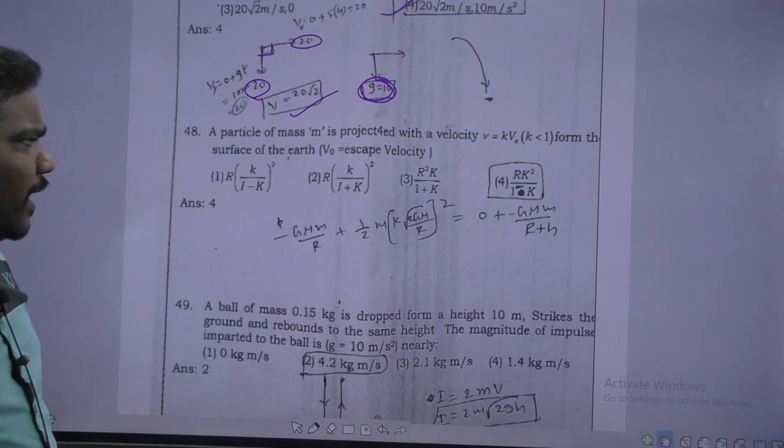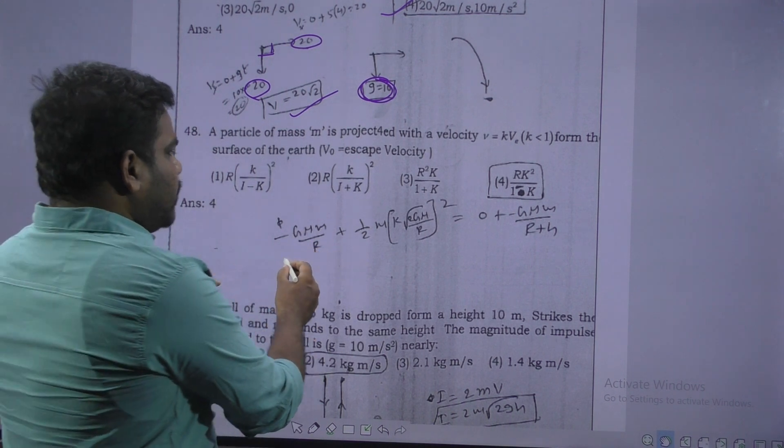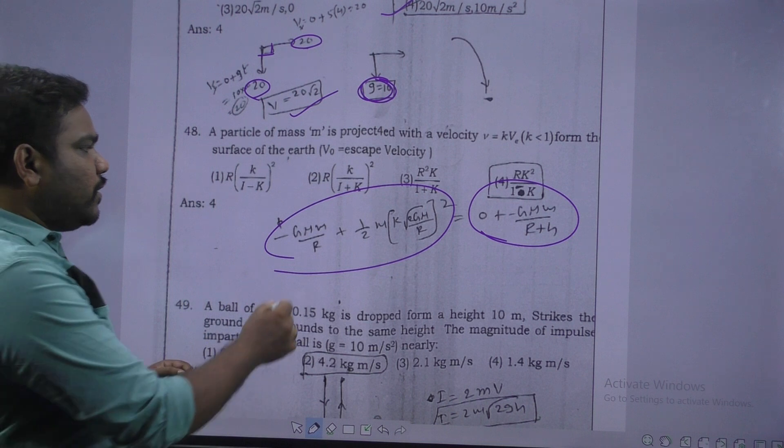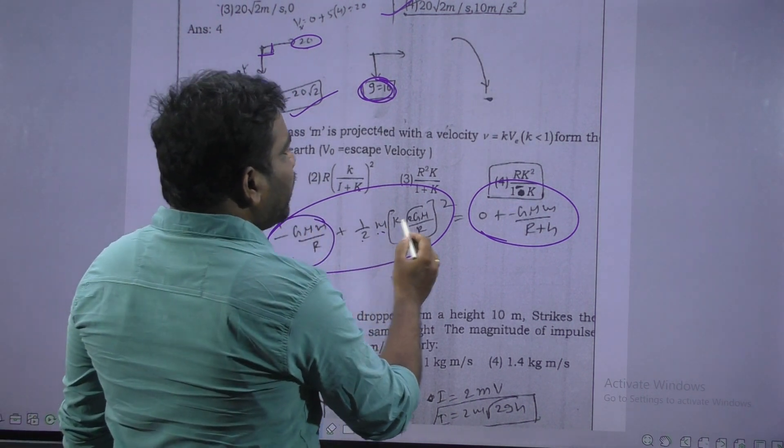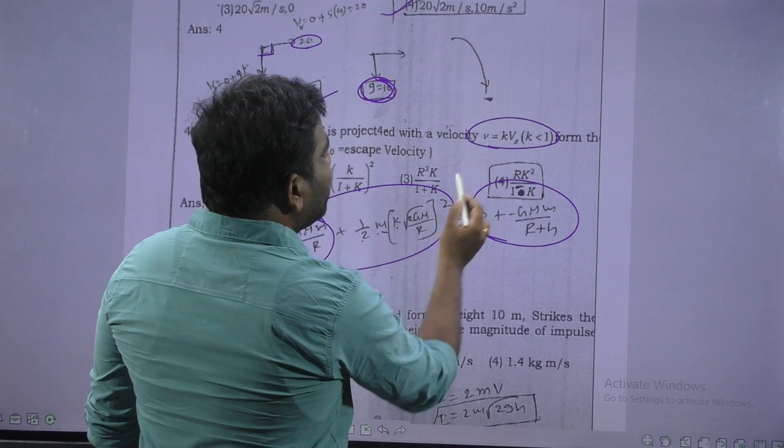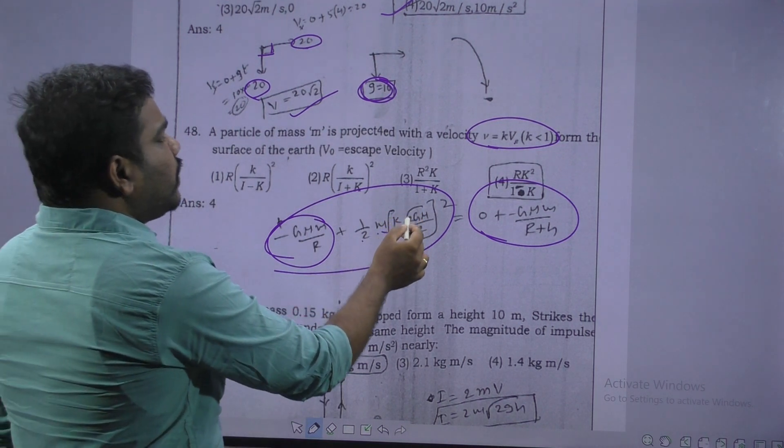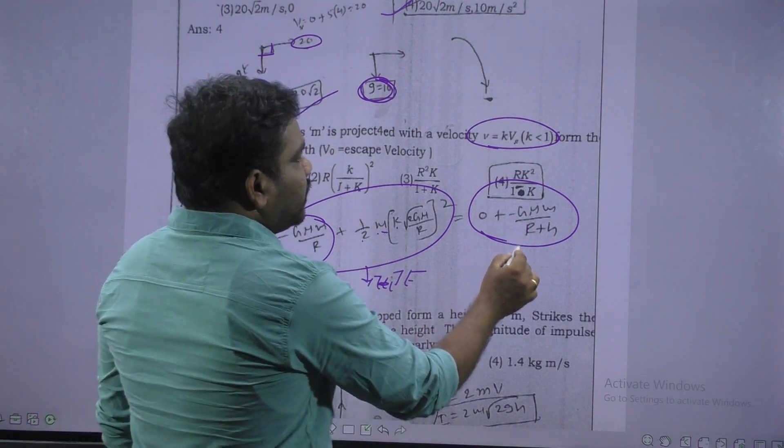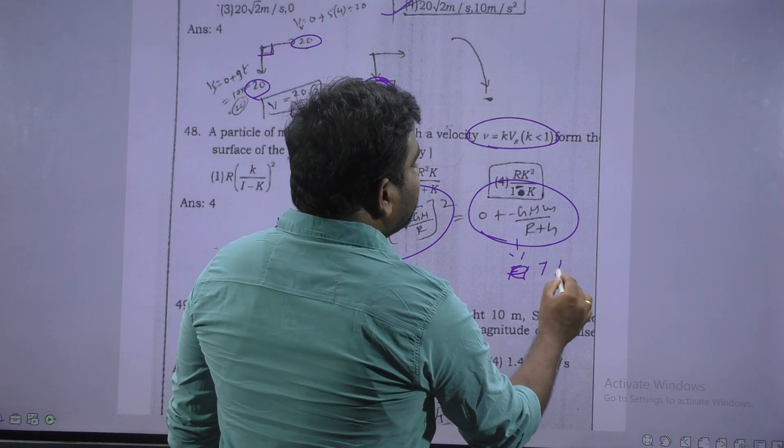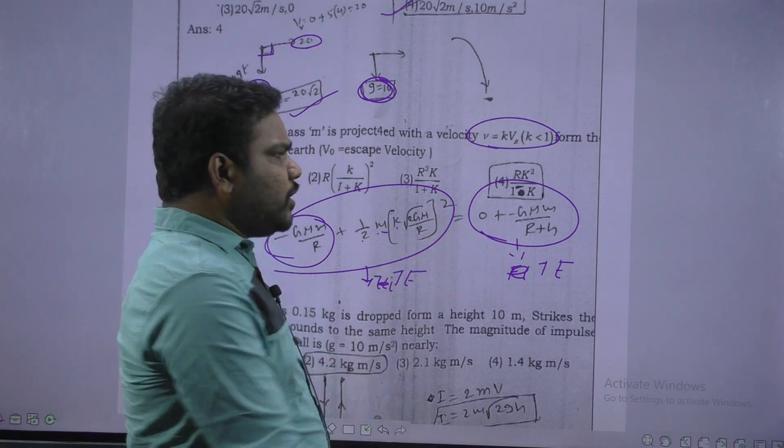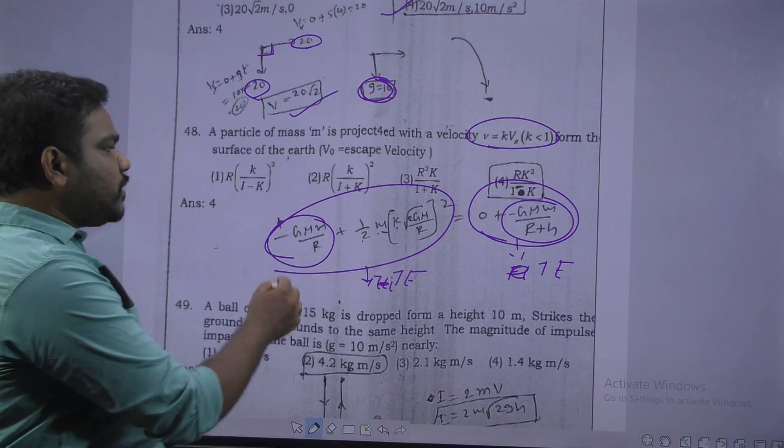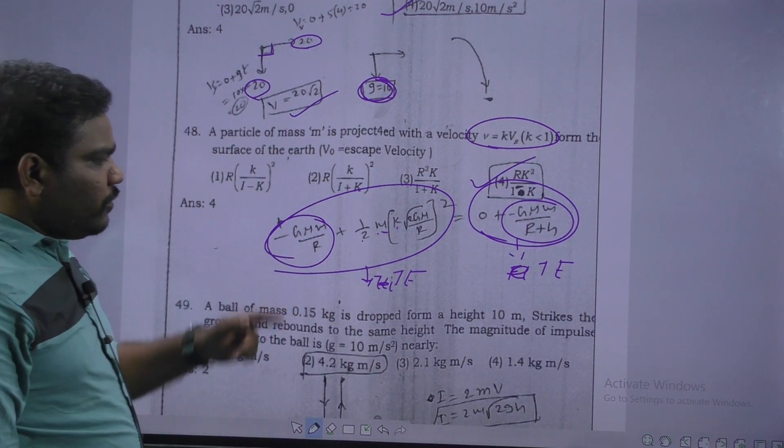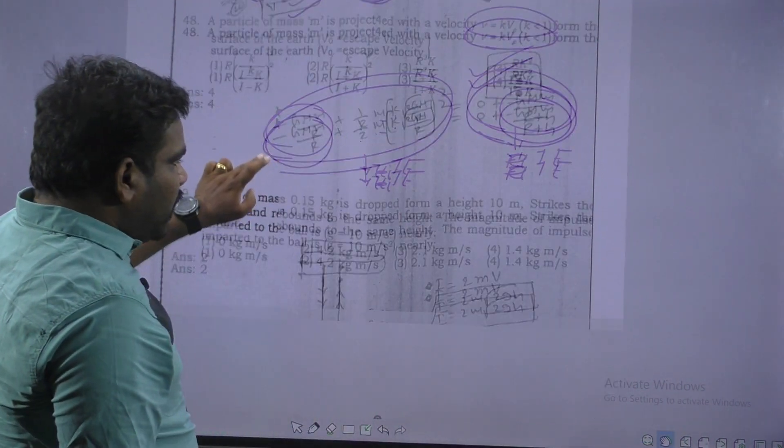Next. This is escape velocity problem using conservation of energy. On the surface total energy, this is potential energy minus GMm by R, kinetic energy half m V square. V square is how much given, K times VE, VE means orbital escape velocity that is square root of 2 gm by R whole square. This is total energy on the surface. Total energy at maximum height, kinetic energy 0, only potential energy that is minus GMm by R plus H. Both sides GMm by R cancel. After simplifying, H is equal to R K square by 1 minus K square. Option 4.